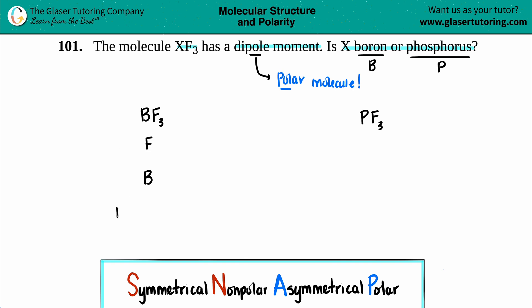So maybe I'll put one F up here, one F down here, and one over here. And the same thing for the phosphorus, right? I have a phosphorus, and then I have three fluorines. So I guess we'll put them in the same spot.